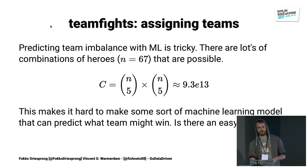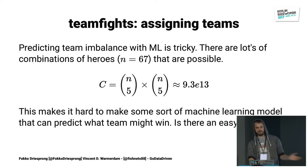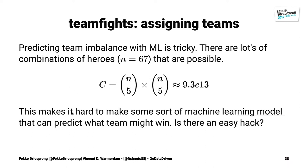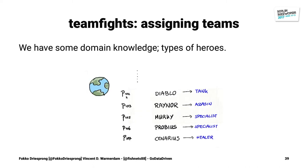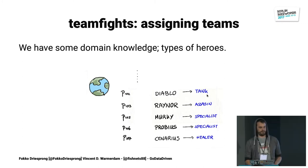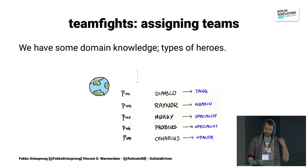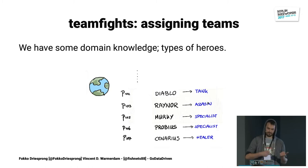If you want to assign teams, that's a little bit more tricky — this is the all-assassins-versus-all-healers use case. You could take all the characters and all possible combinations, but it grows indefinitely and you get into a nasty spot. It would be nice to come up with an easy hack. If you've played the video game, you get some domain knowledge: a certain character maps to a certain type. For example, Diablo is a tank — someone who can take a lot of damage. Raynor is an assassin — someone who does a lot of damage. Murky is a specialist who destroys towers. Cenarius is a healer who keeps your characters alive.